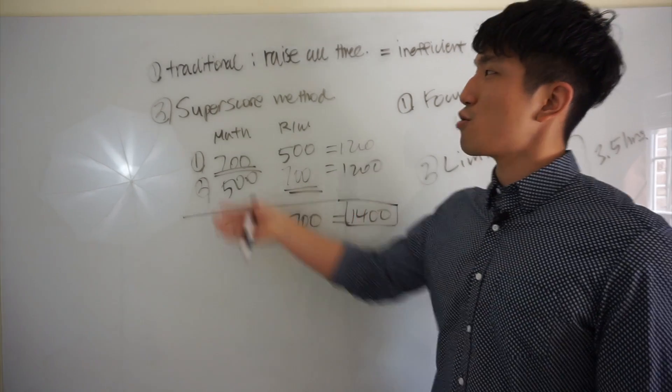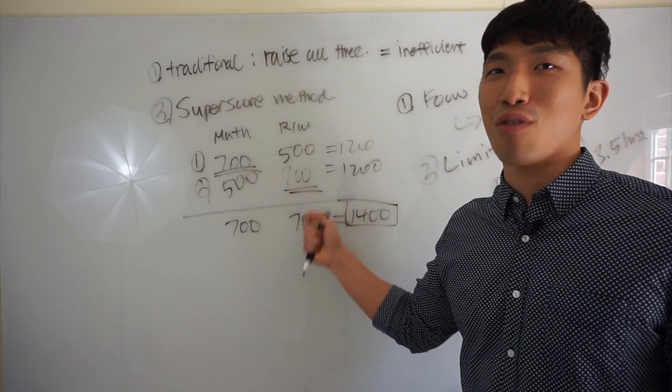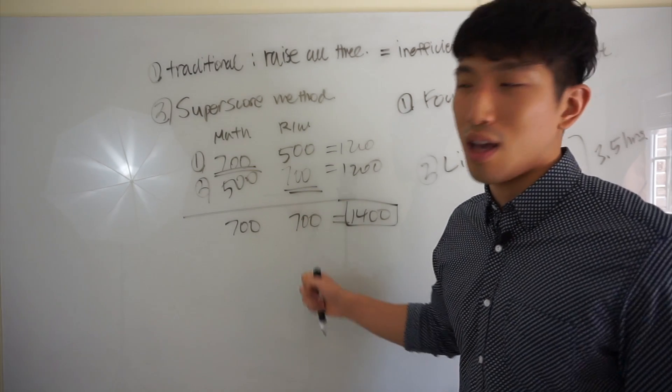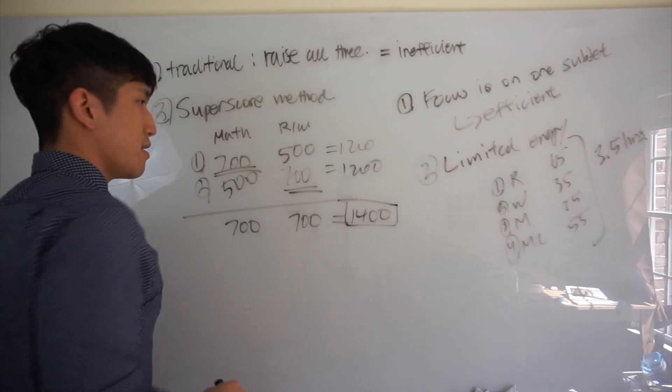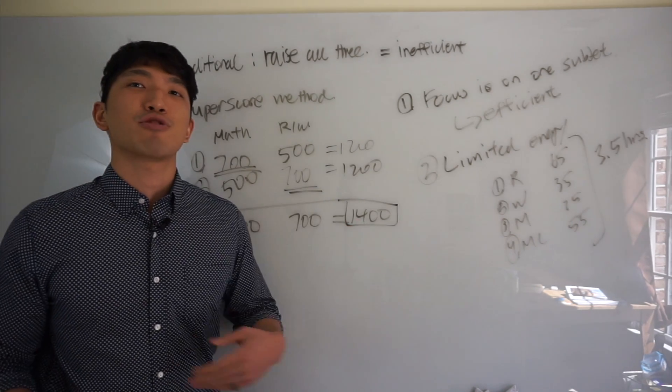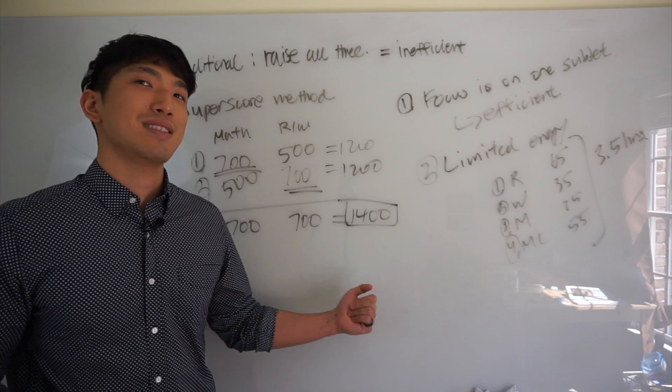So the solution to that is going to be a super score method where you focus on each section for each exam, because at the end, they're going to only look at your highest score. And two benefits to that, two benefits to super score method is that first, it allows you to focus on just one subject at a time, which is very efficient.